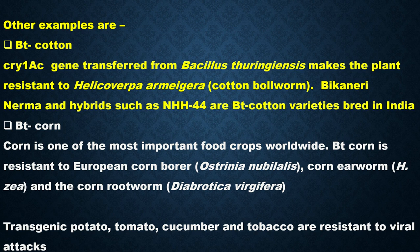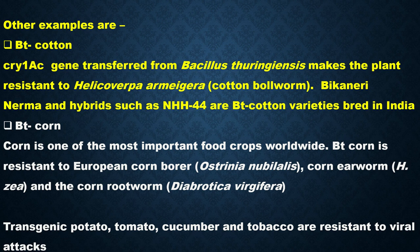Bt corn is another prominent example. Corn is one of the most important food crops worldwide — corn starch, corn flakes, sweet corn, and many other products are derived from it, so this crop needs protection. Bt corn is resistant to the European corn borer (Ostrinia nubilalis), corn earworm, and corn rootworm. These three organisms were causing detrimental effects in corn plants, so the plant was genetically modified to be resistant to all three.